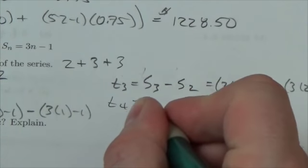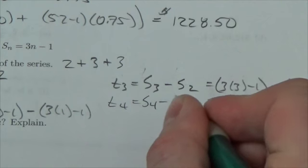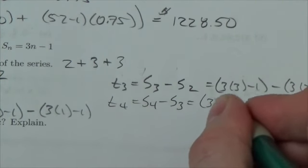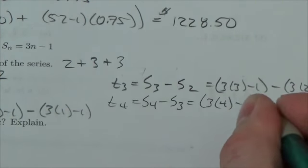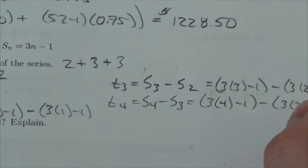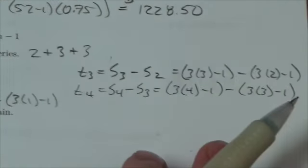Now the fourth term is going to be the sum of the first four terms minus the sum of the first three terms. So three times four minus one, minus three times three minus one.